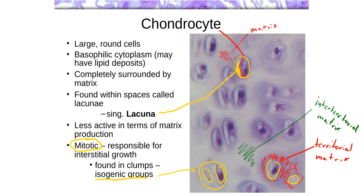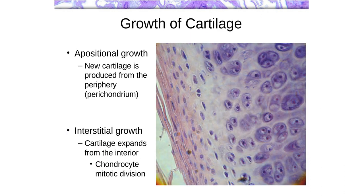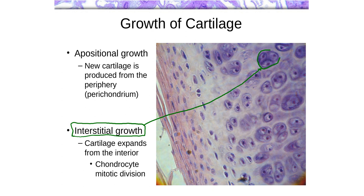You can identify where isogenic groups are by looking at which cells share a territorial matrix — indicating they have divided more recently. This type of cell division within the existing matrix is known as interstitial growth, meaning growth from within. Isogenic groups — like a cluster of three cells all sharing a strongly basophilic territorial matrix — are clear evidence of recent mitosis and interstitial growth.